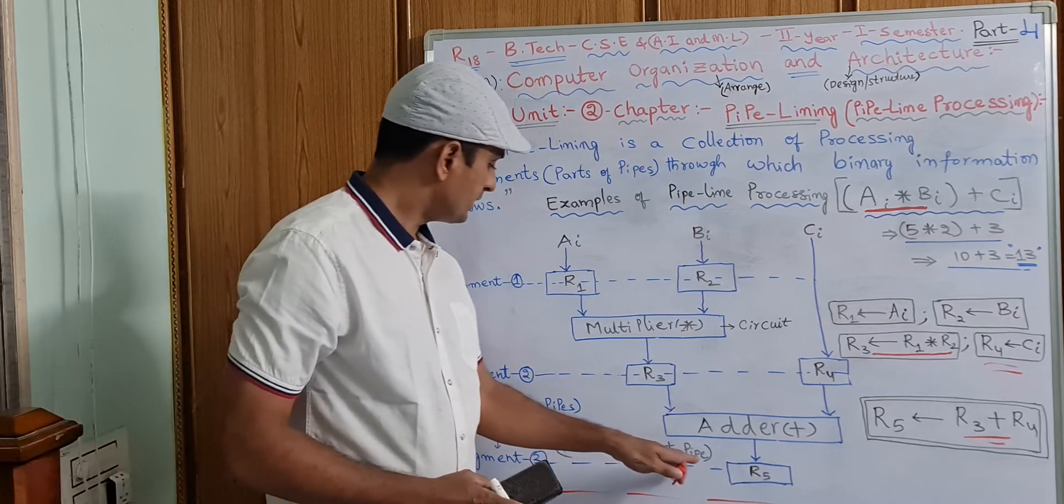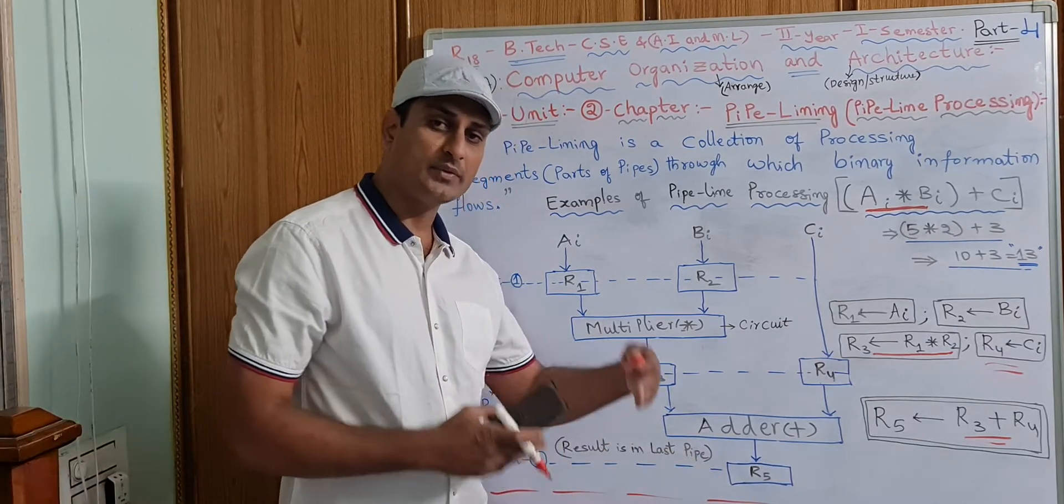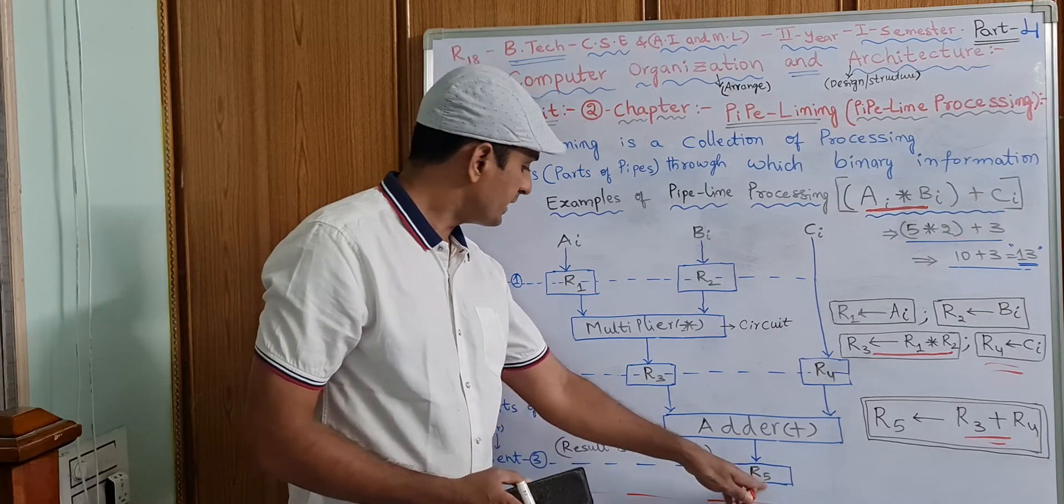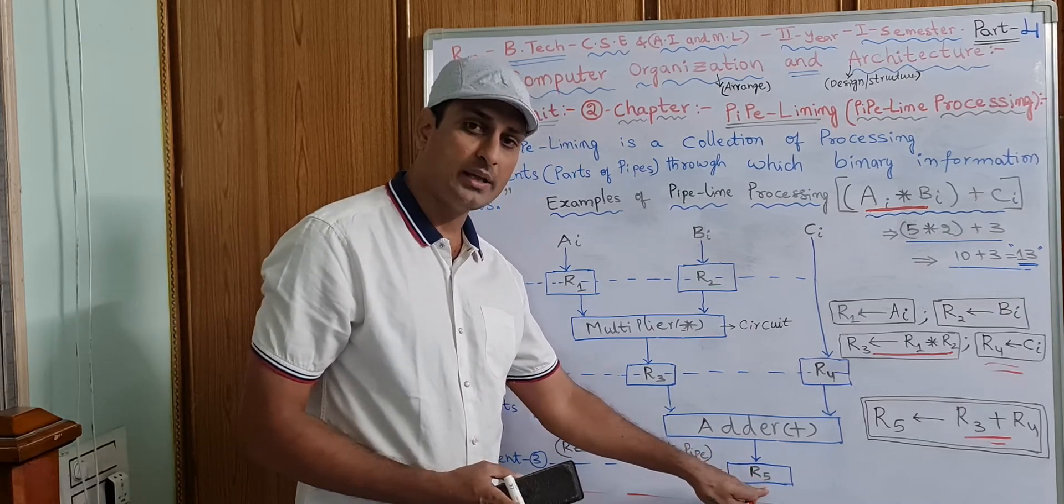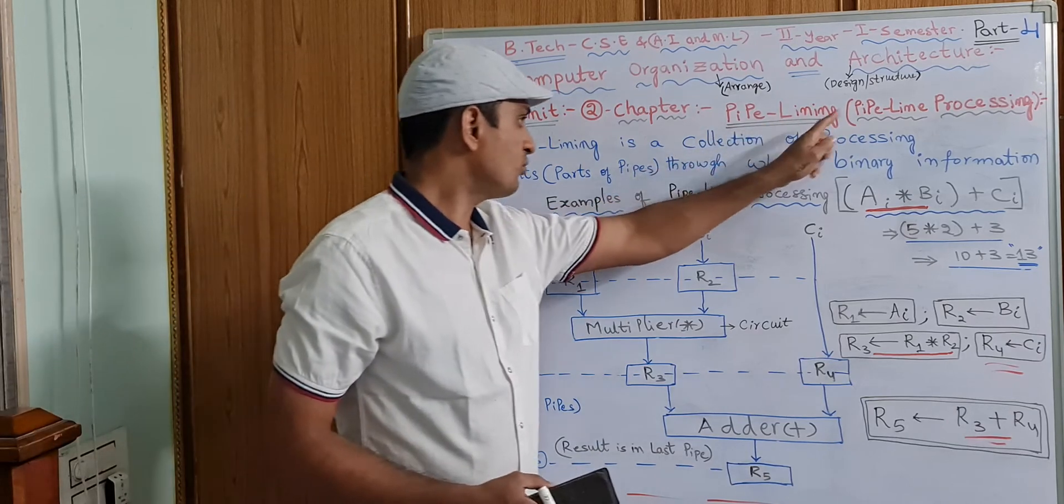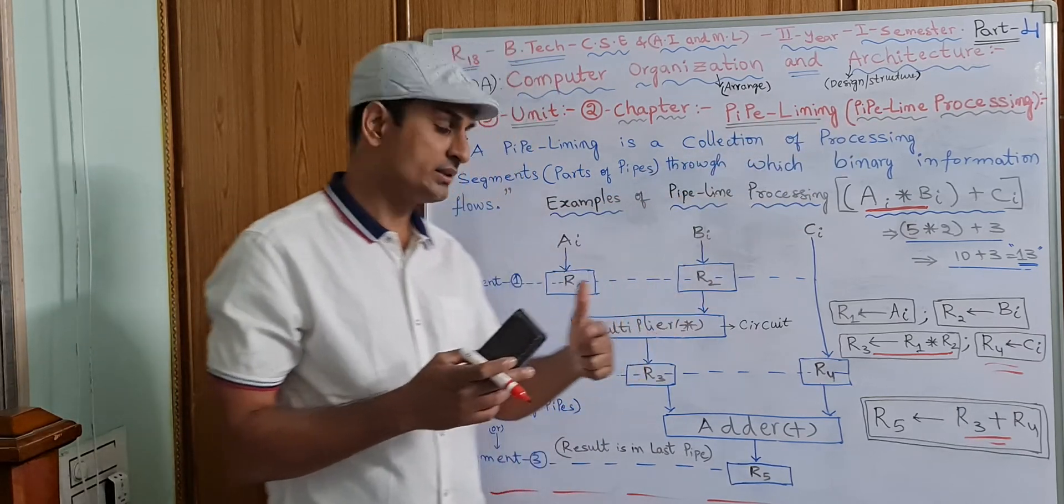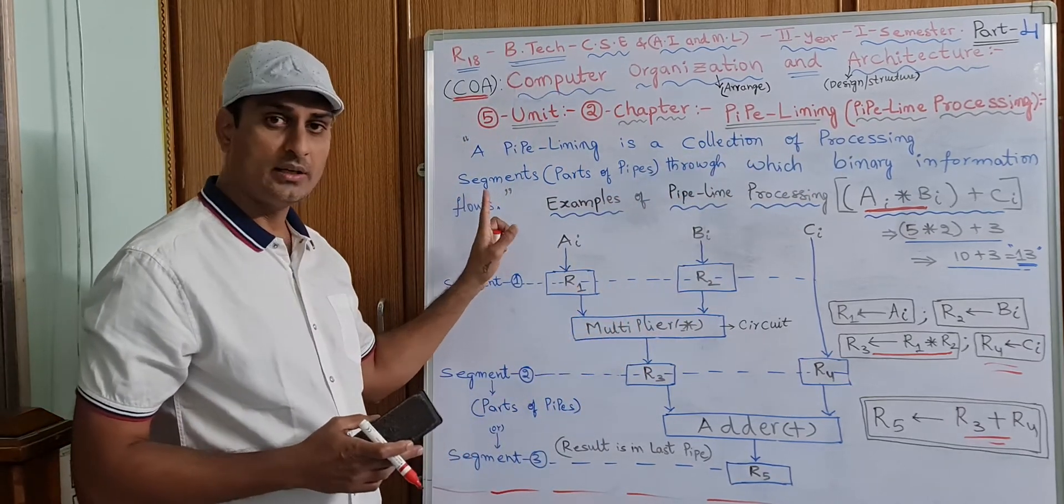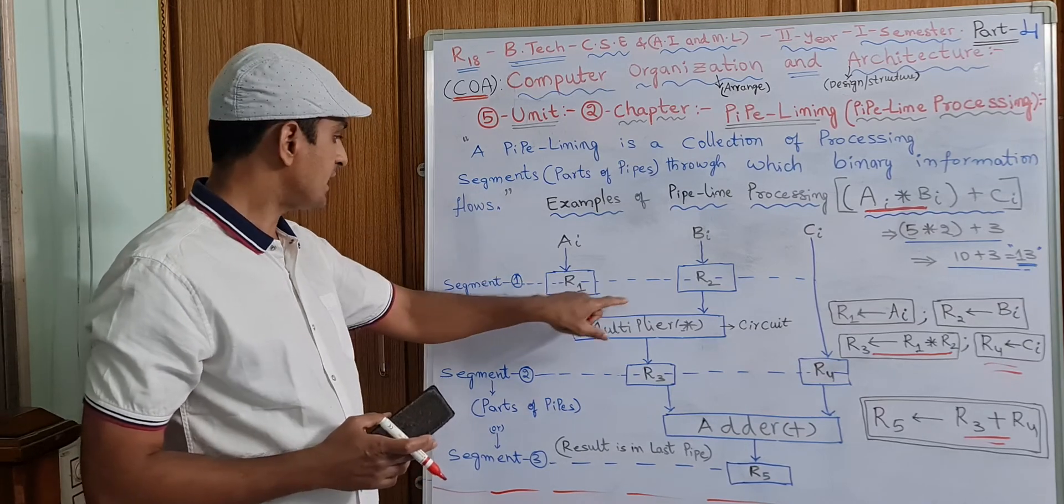So, the result is in the last pipe. The parts of the last pipe will be there in the result R5 register. This is nothing but pipelining or pipeline processing. Now you can understand the diagram.